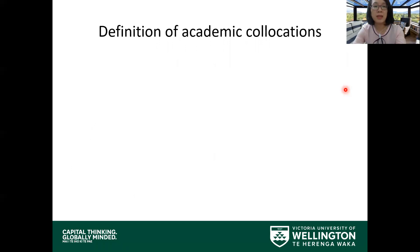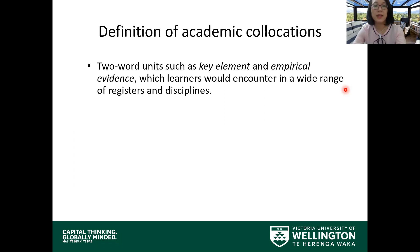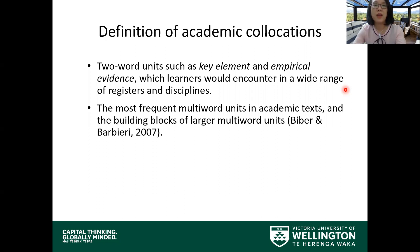I want to begin by giving a definition of academic collocations. Academic collocations are defined as two-word units that learners could encounter in a wide range of registers and disciplines. Some examples are 'key elements,' 'empirical evidence,' etc. Academic collocations are important because they are the most frequent multiword units in academic texts, and they are typically the building blocks of larger multiword units.